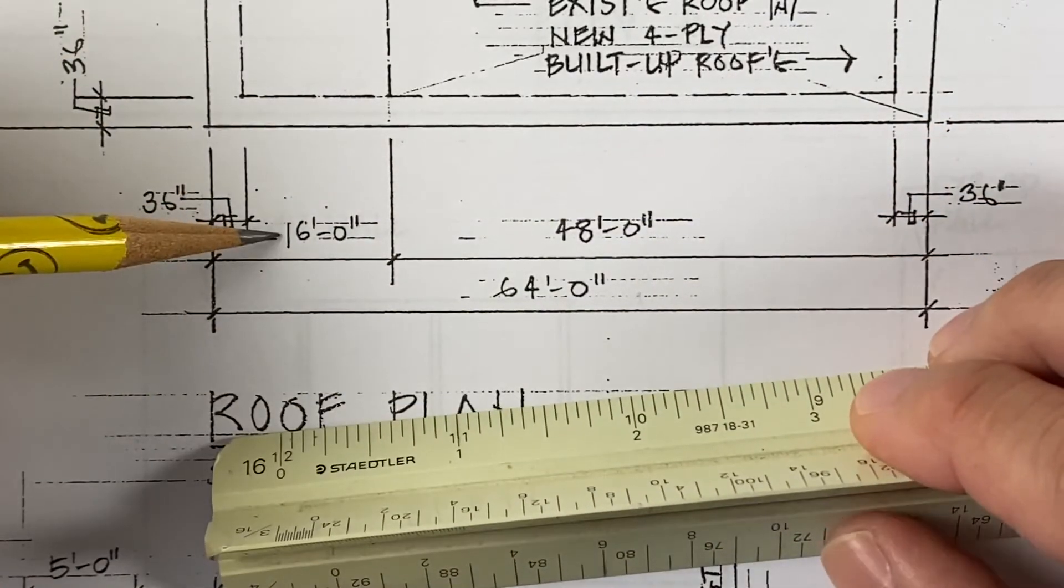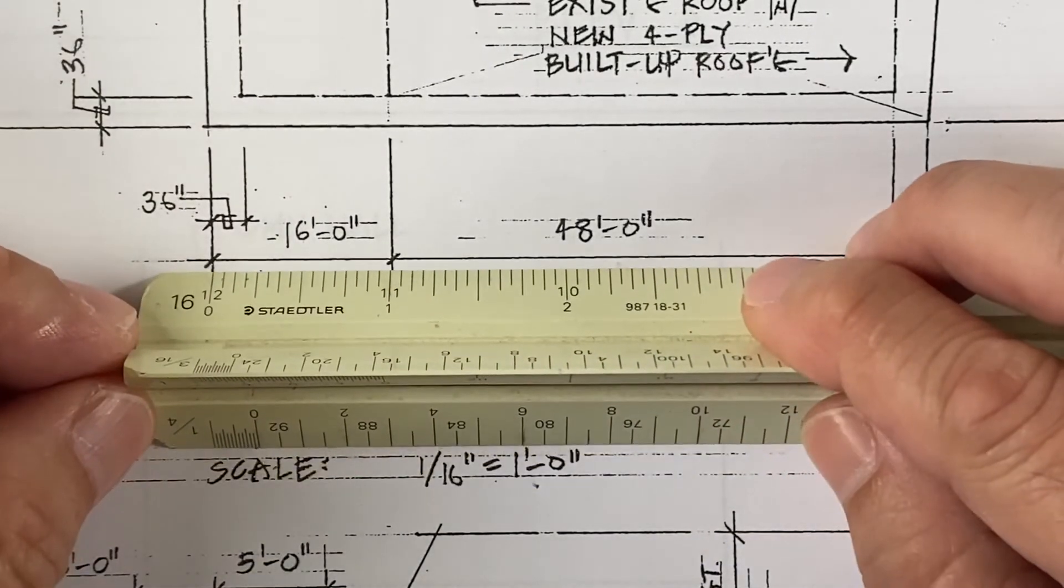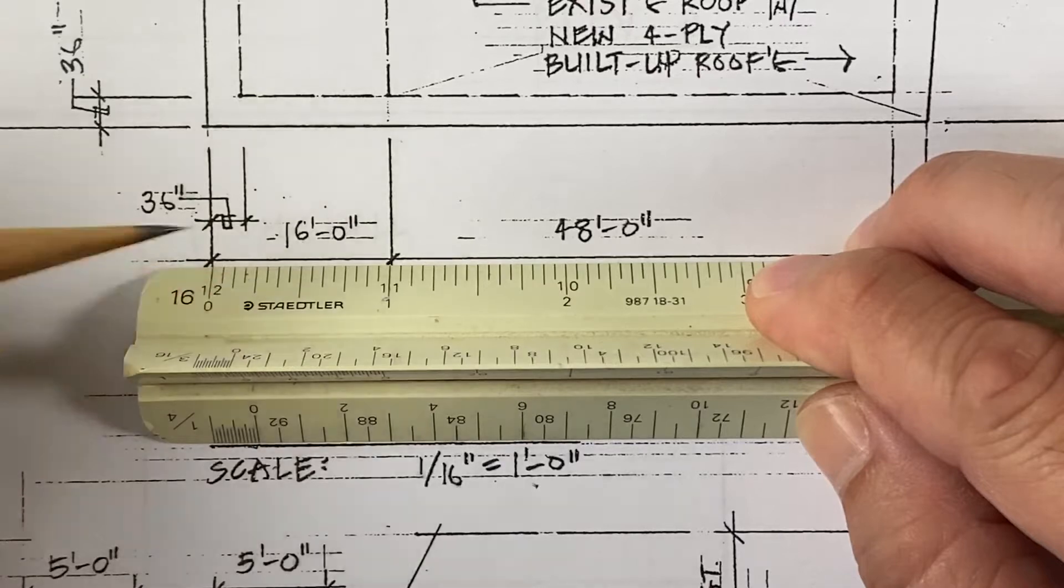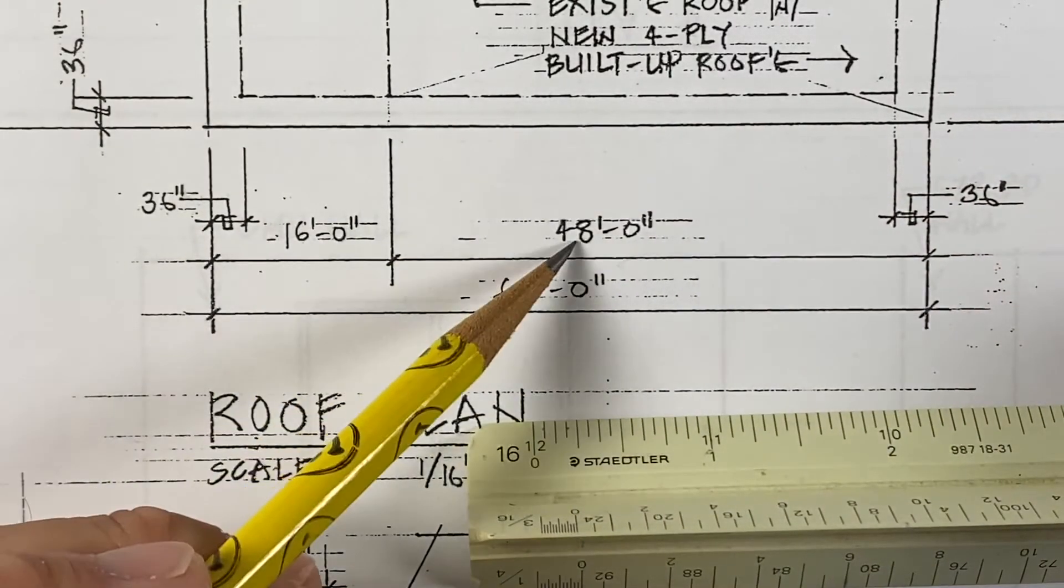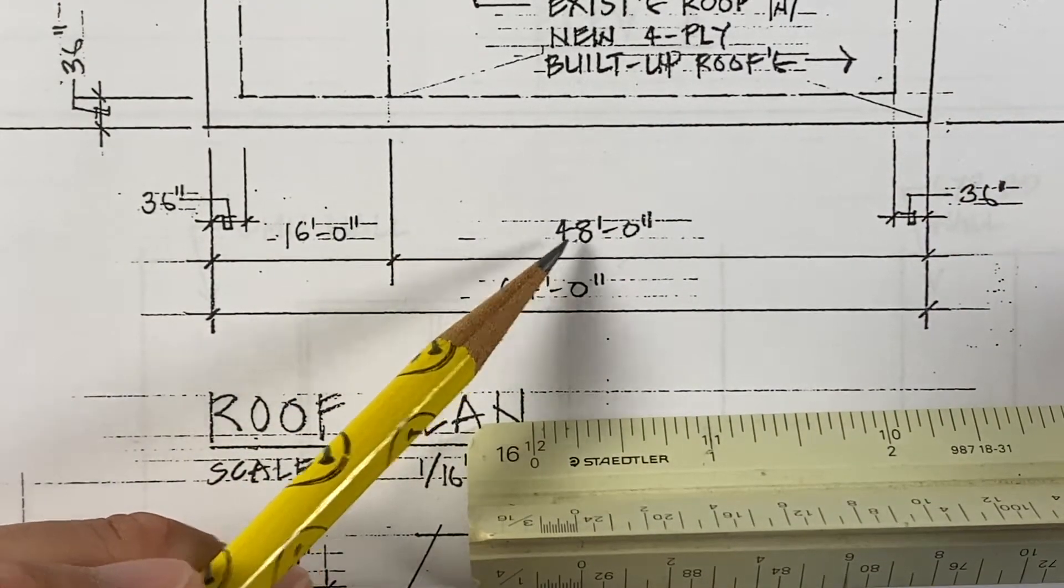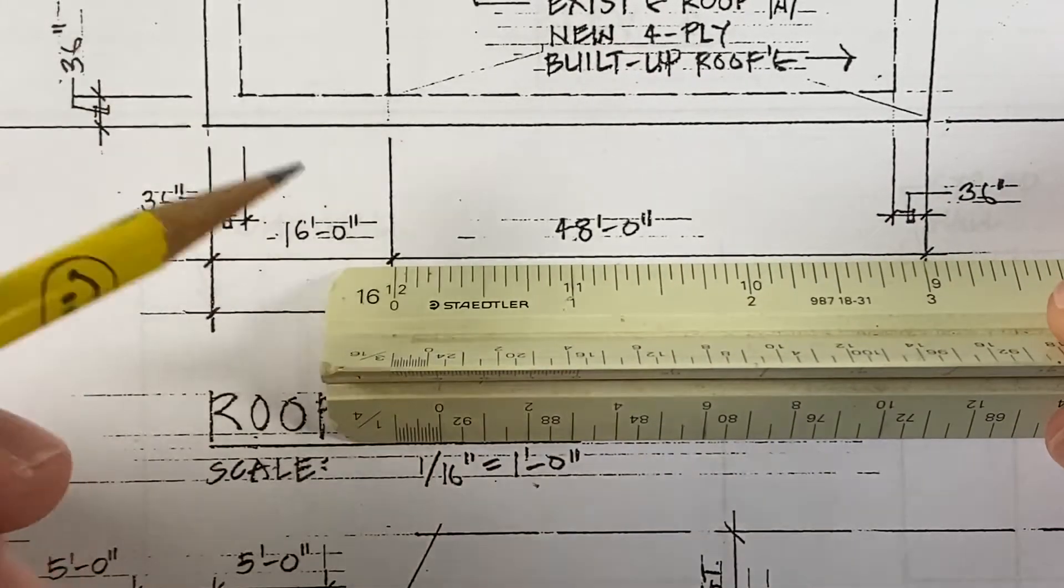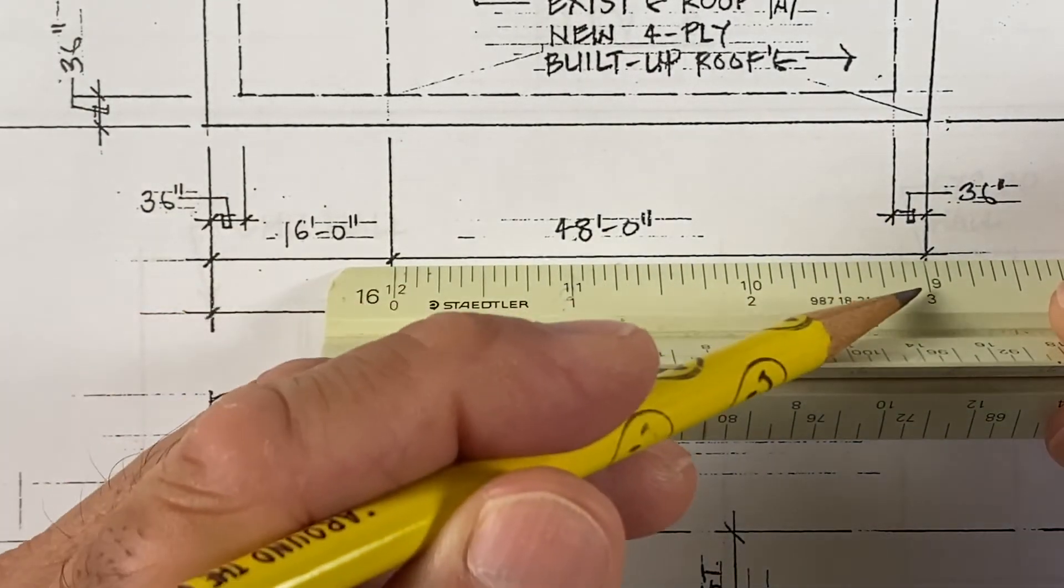We can also verify this 16 feet dimension, which is 16 feet and one inch. And this 48 feet dimension, which equals three inches for 16, 32, and 48 feet.